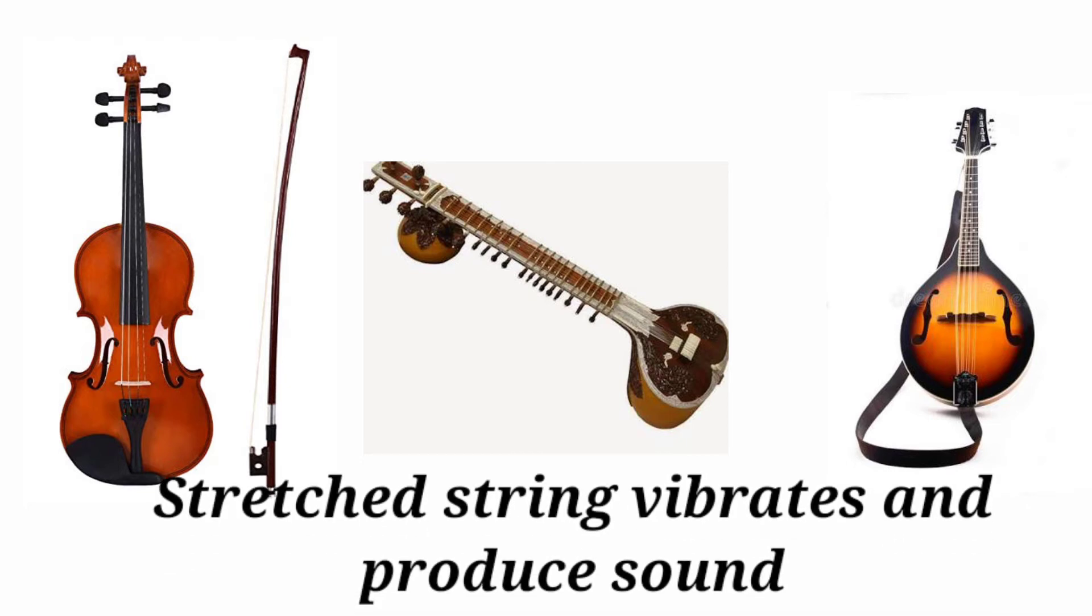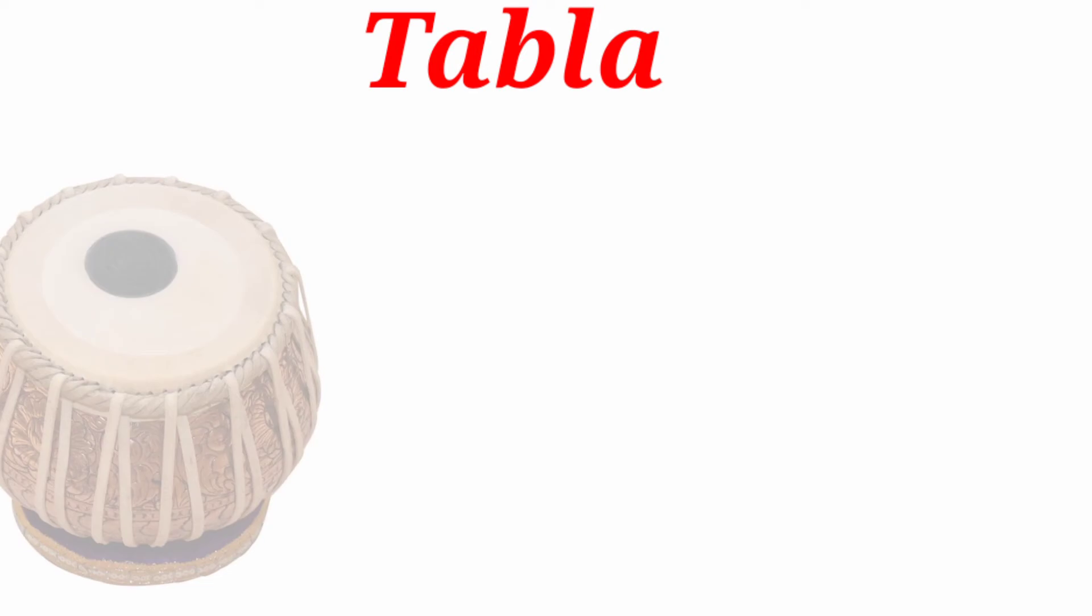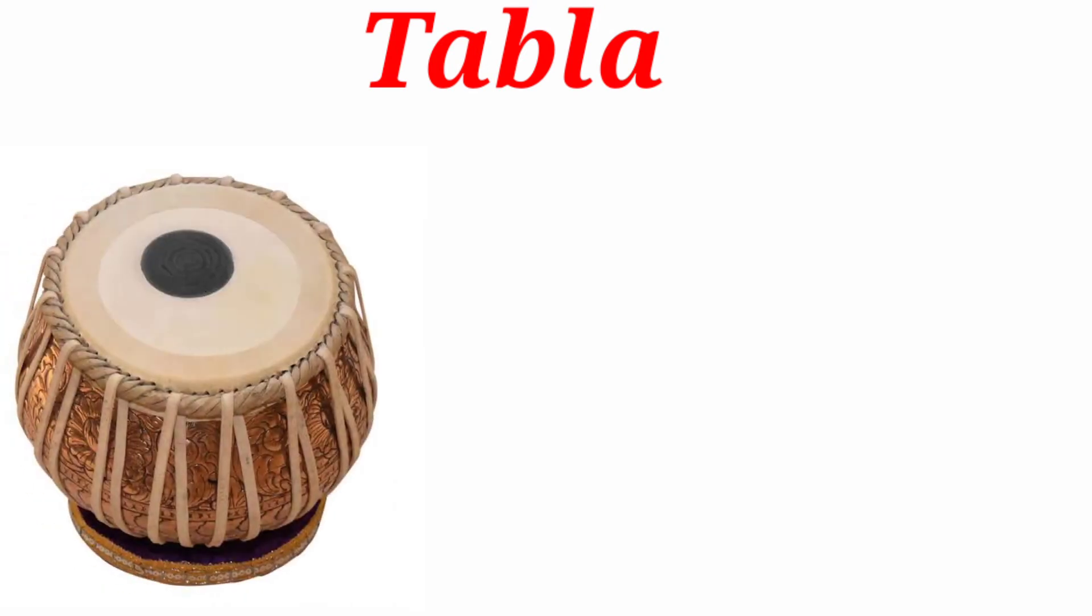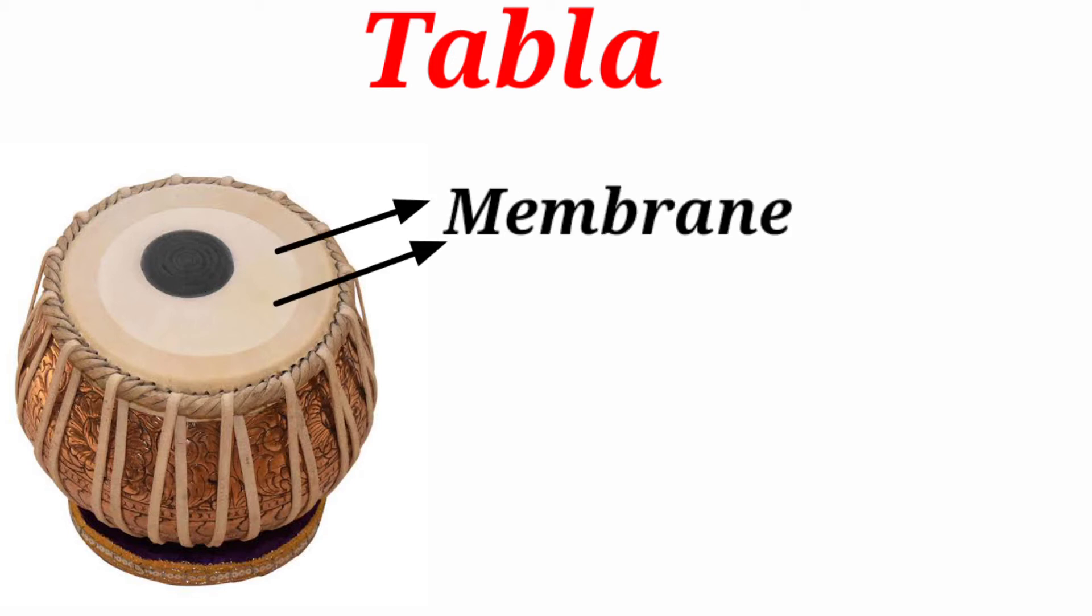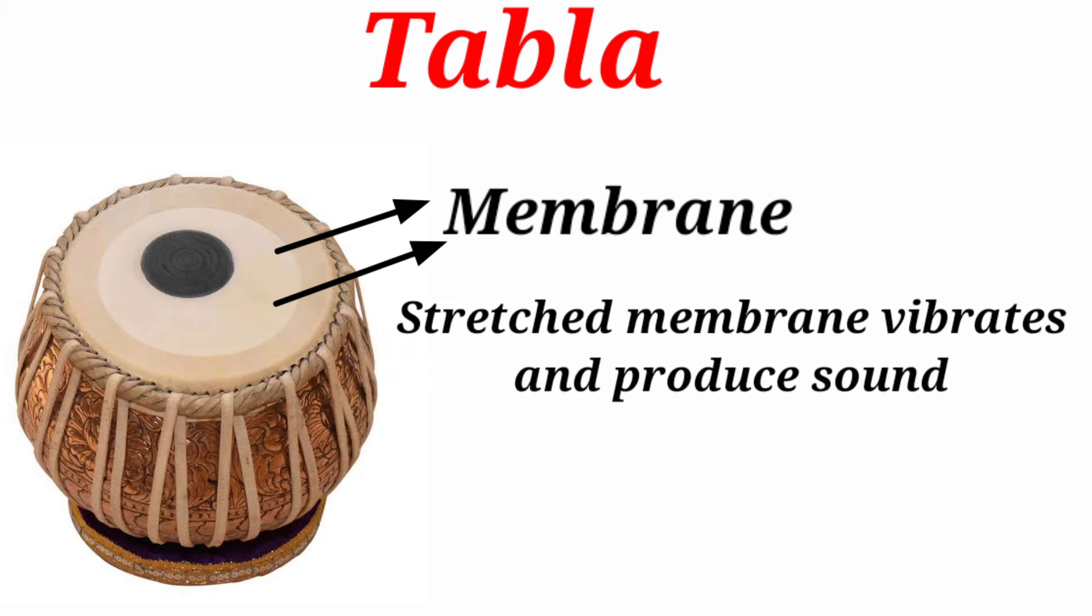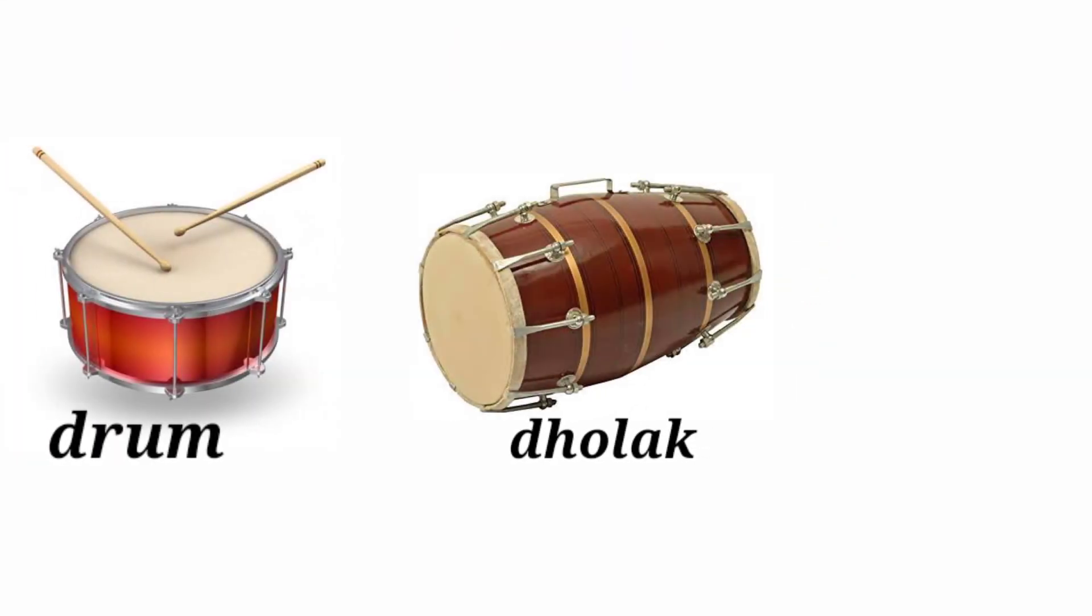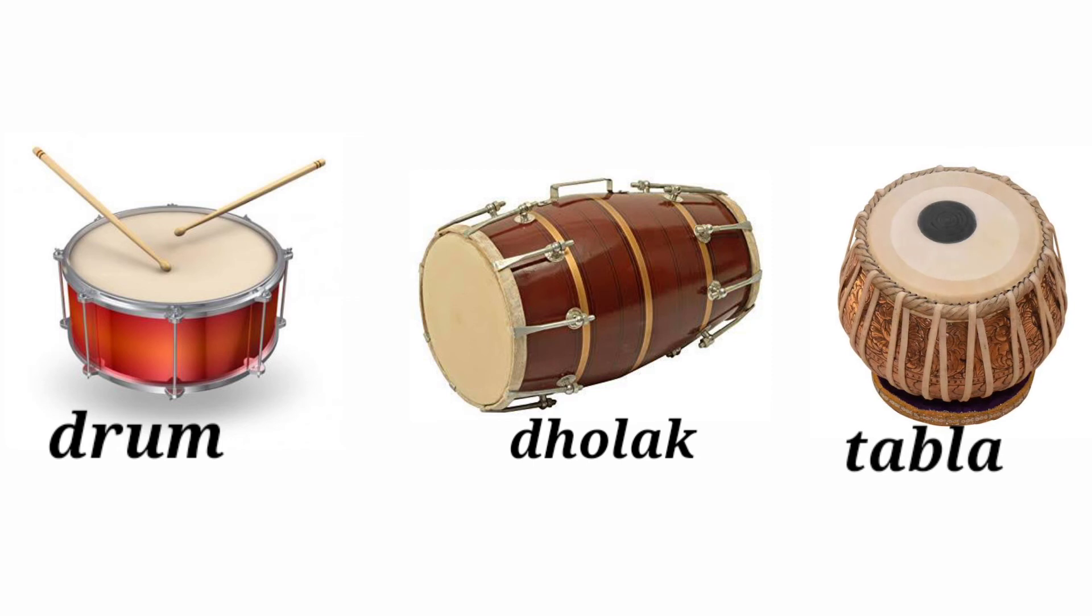Next is tabla. How do you think that sound is produced in this instrument? When you play, you hit this part of it, and this is known as membrane—a thin sheet of skin. When stretched membranes vibrate, it produces sound, and air inside the tabla also produces sound. Similarly, drums and dholaks are some other examples of membrane-type instruments that produce sound.